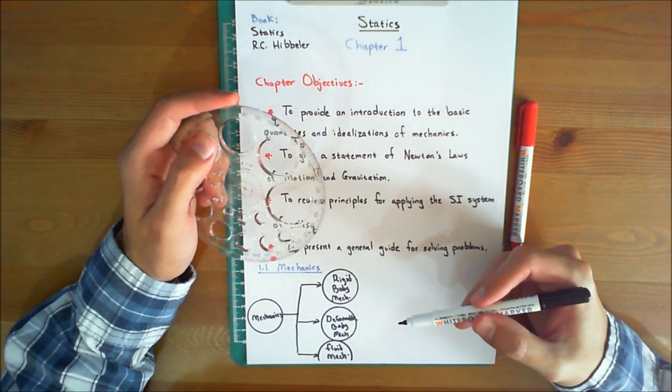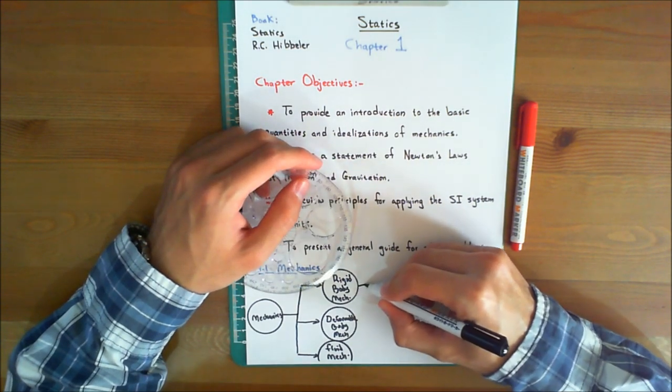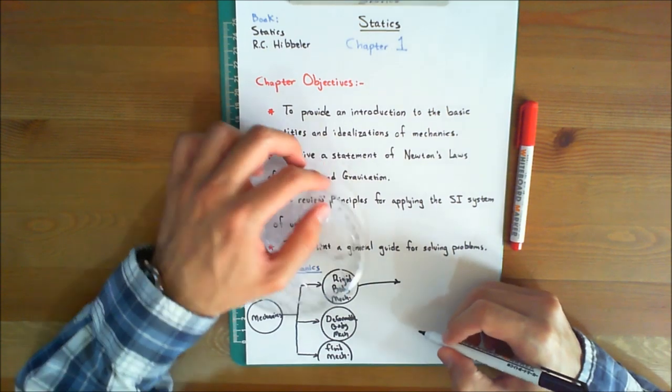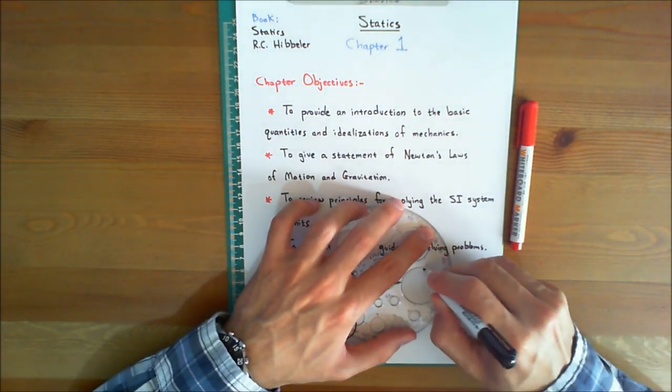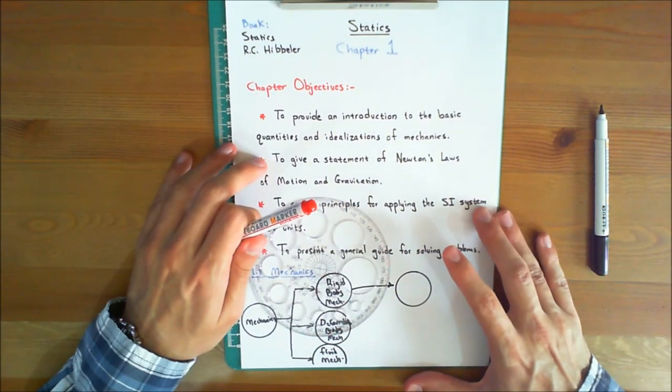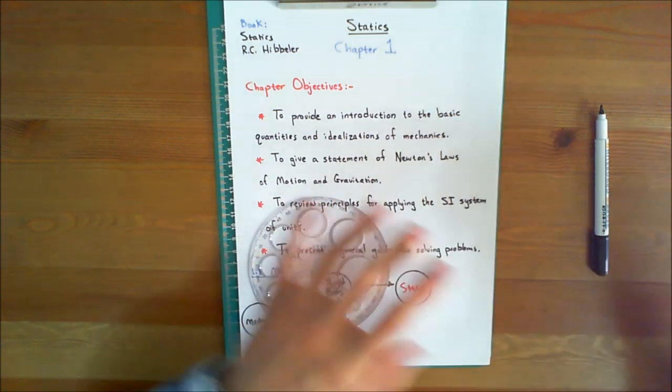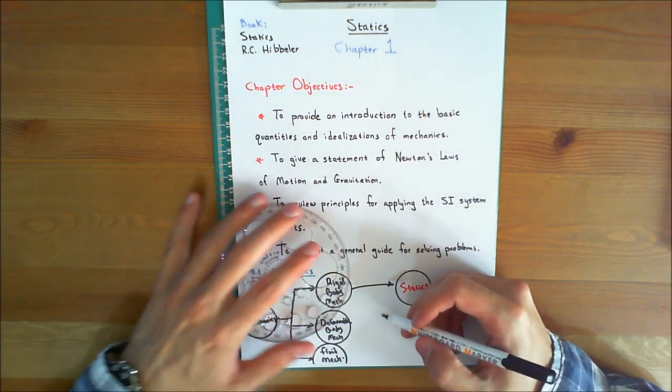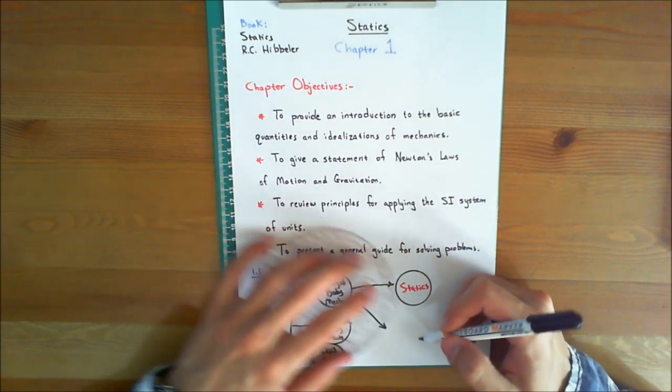Rigid body mechanics is divided into two areas. Let's draw an arrow over here. The first of which is called statics, and the second is called dynamics.